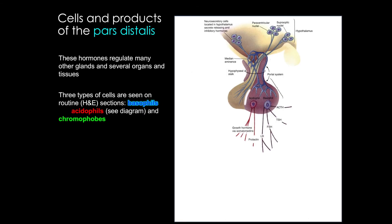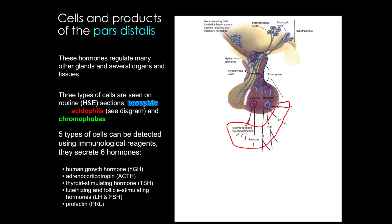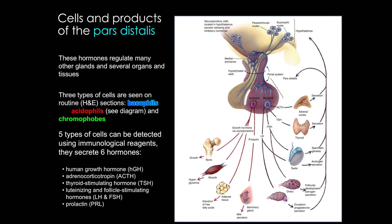The cells in the anterior pituitary produce peptide hormones, so they have a lot of rough endoplasmic reticulum and secretory granules. These were originally classified as acidophils, basophils, and chromophobes based on color, but more recent studies have shown there are at least six hormones produced by five different cell types. Most are tropins that regulate the function of other endocrine cells, including cells in the thyroid, the gonads, and the adrenal cortex. These are growth hormone (somatotropin), prolactin, thyroid stimulating hormone, follicle stimulating hormone, luteinizing hormone, and adrenocorticotrophic hormone — all regulating reproduction, growth, metabolism, and ion balance.